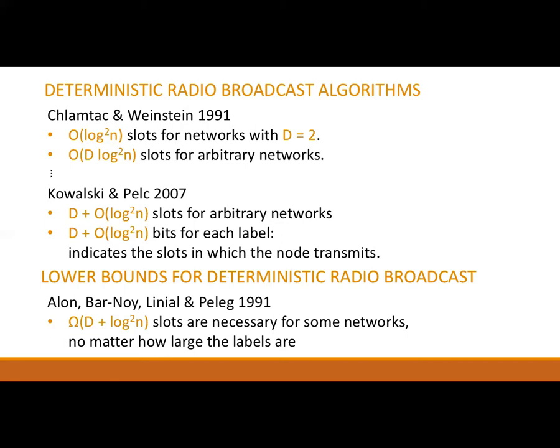The Kowalski and Pelc algorithm uses D plus O(log²N) slots for networks with source eccentricity D. Nodes do not need distinct identifiers — each node just has a D plus O(log²N) bit label, which indicates in which slots the node transmits, starting from the slot after it first receives the source message. Their algorithm is as fast as possible, matching a lower bound by Alon, Barnoy, Lineal, and Peleg from 1991, which says that there are networks with source eccentricity D for which Ω(D + log²N) slots are necessary.